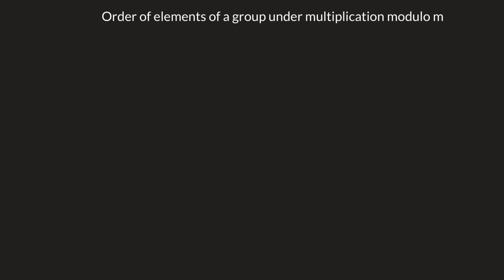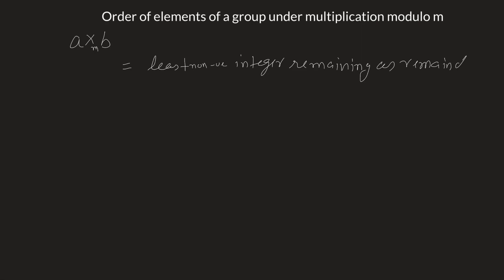We will study firstly what is multiplication modulo M. If we write A multiplication subscript M, it is equal to the least non-negative integer remaining as remainder when the usual multiplication A times B is divided by M.